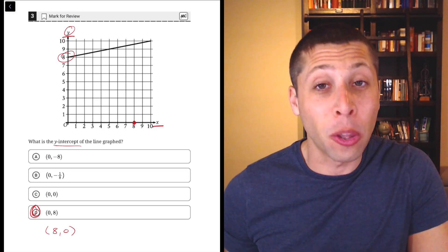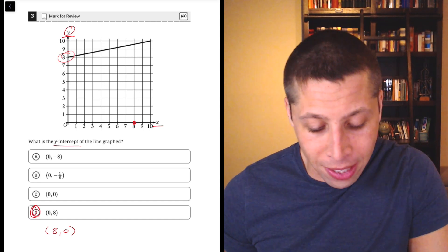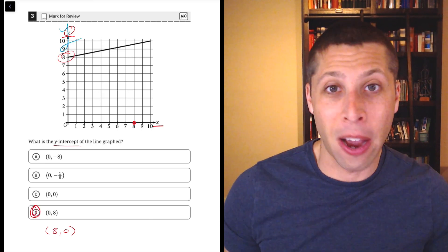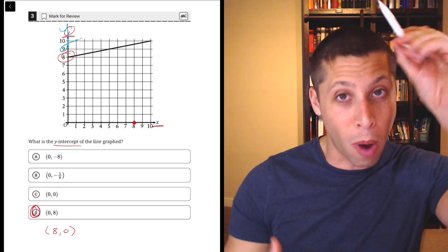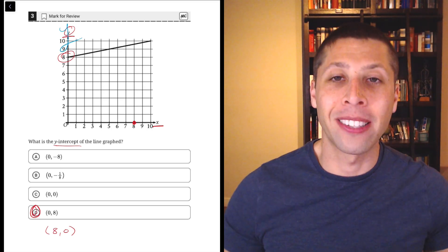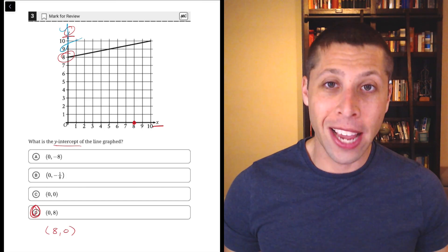You can even think about the way that the y is drawn, right? Y is going to have this big, nice, long tail. And to me, that's how I used to remember it as a kid, the y going up and down. It's a very up and down letter because it represents an up and down axis. So whatever it takes, remember that.